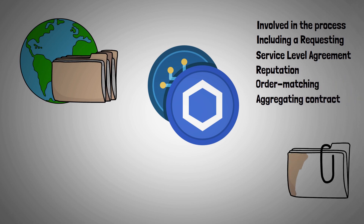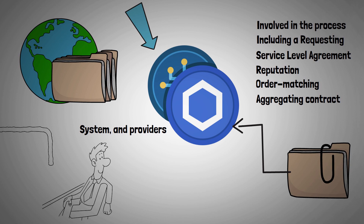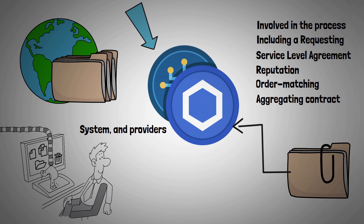To use Chainlink, a user creates a contract that specifies their data needs. Providers bid on providing the data and commit a stake of link tokens. Oracles then collect and process the data and return it to the buyer through the Chainlink service. The data is aggregated and verified using an oracle reputation system, and providers are paid in link tokens for their services. In simpler terms, Chainlink is a way for blockchain-based smart contracts to access real-world data through a network of nodes and oracles.